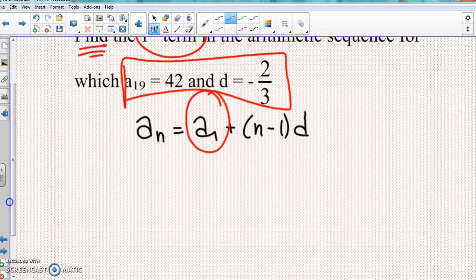So we know that the letter d is negative 2 over 3, so let's go put that in right there. And then they gave us a₁₉ equals 42. So if we're talking about aₙ, you write aₙ in this spot to match up.